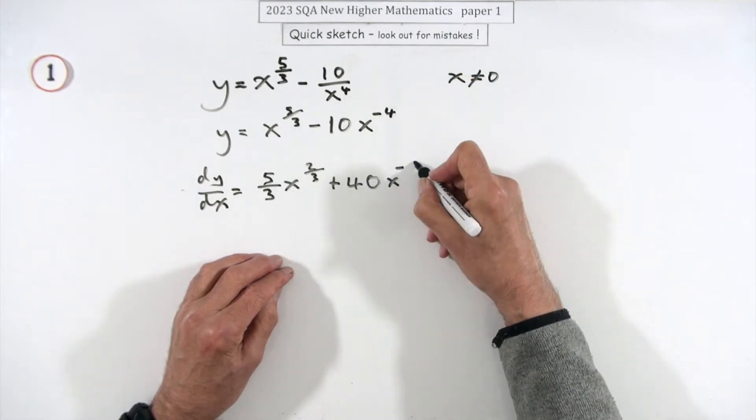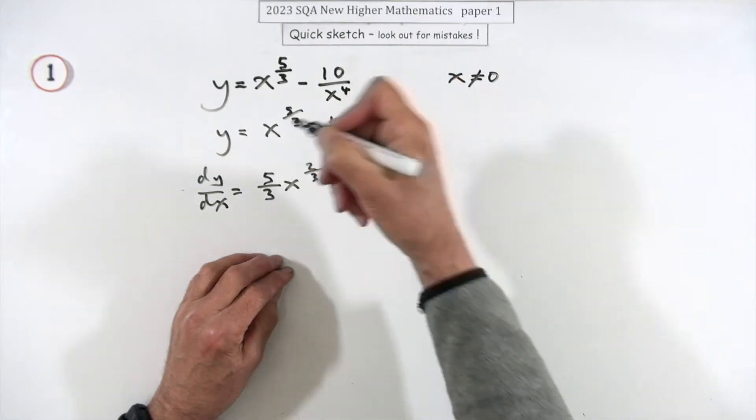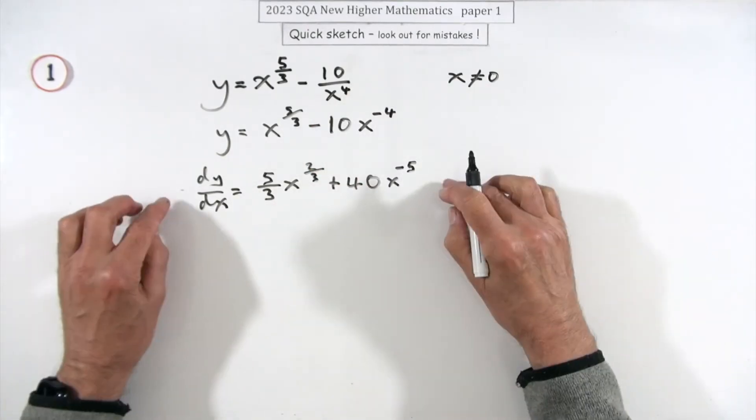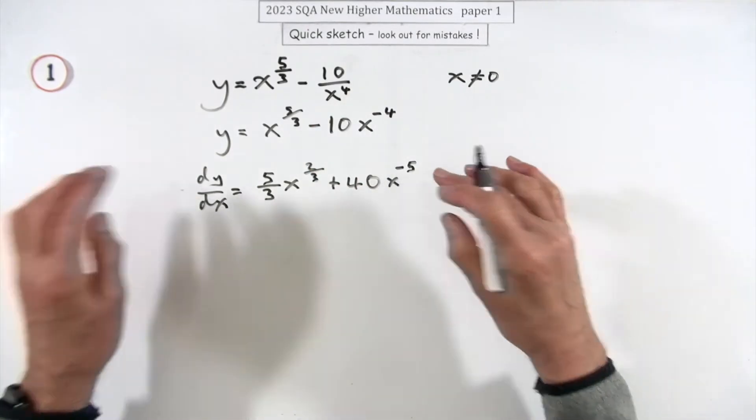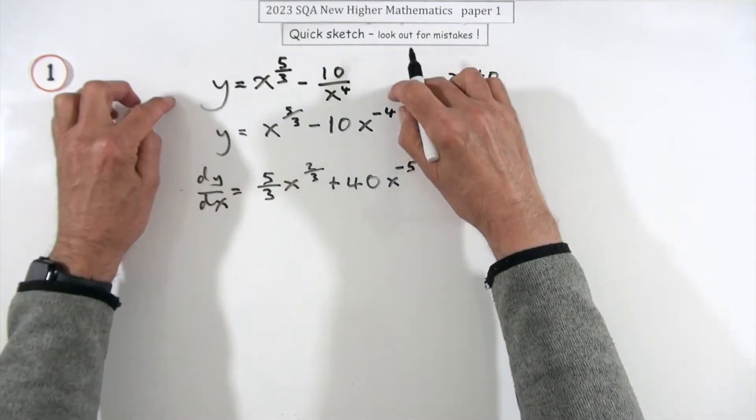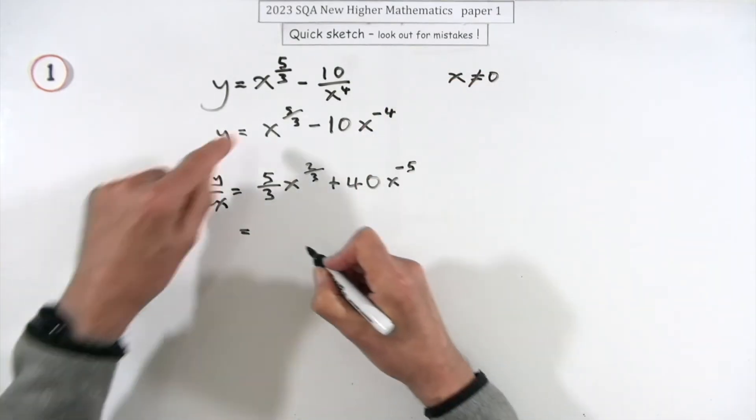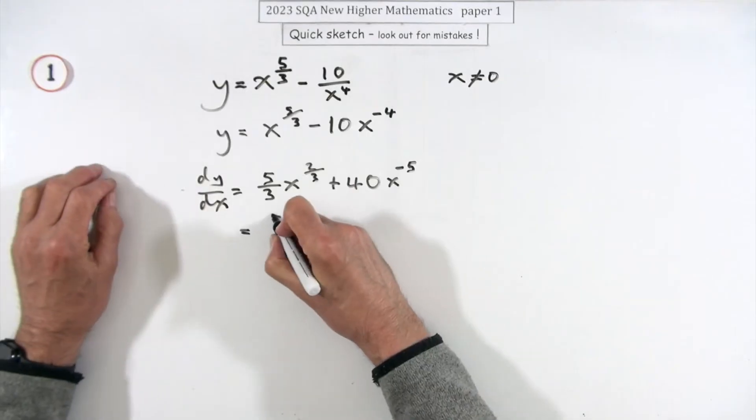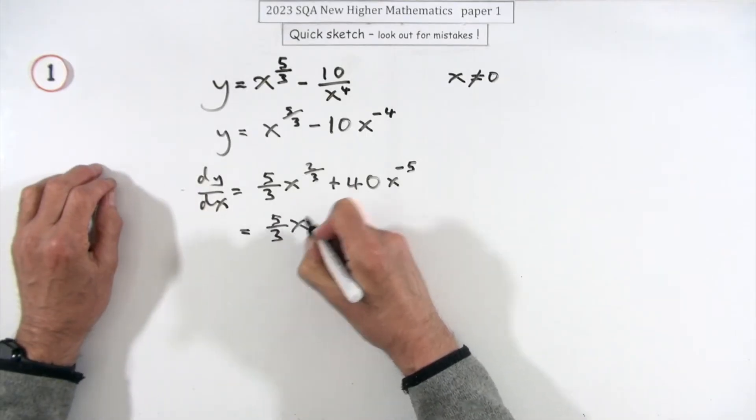But when you take one off the power it's even worse, it goes to negative five of course. So going back one now, I'm not sure if that's all they require it may well be, but if you want to put it back the way you found it, then the way you found it was actually leaving this one alone as five thirds of x to the two thirds.